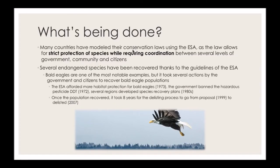Several endangered species have recovered thanks to the ESA. Bald eagles are probably one of the most notable examples. The ESA afforded more habitat protection for bald eagles in 1973, shortly after the government banned the hazardous pesticide DDT, which was thinning the eggshells of bald eagle eggs. Several regions developed species recovery plans in the 1980s. Once the population recovered, it still required a long process to delist the animal from the ESA — which is a good thing, as we don't want these changes to happen suddenly.